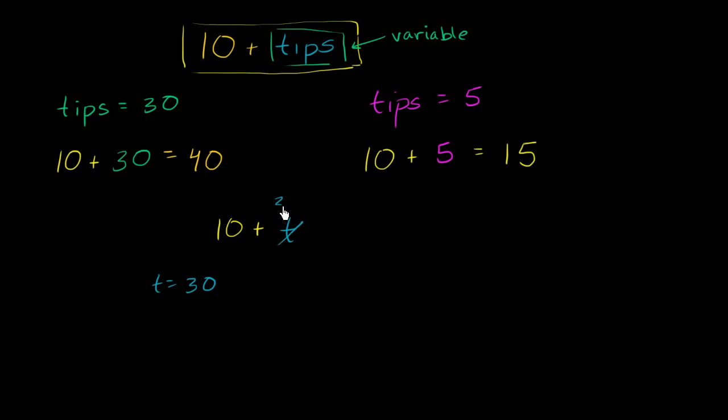Well, then we have a situation, t is equal to 30. This evaluates to 10 plus 30, which would be 40. What would happen if t is equal to 5? Well, then this would evaluate to 10 plus 5, which is equal to 15.